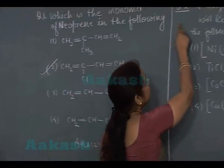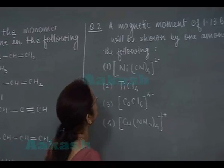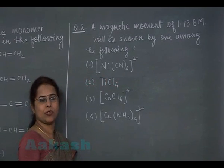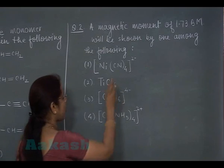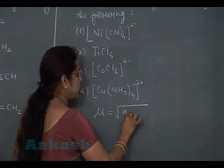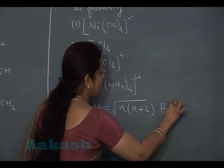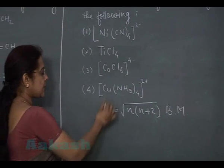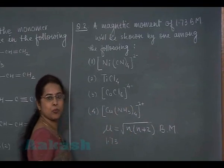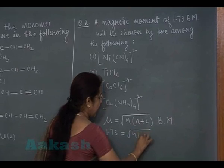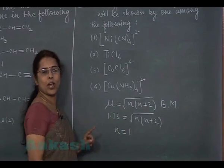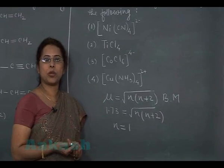Question number 2: a magnetic moment of 1.73 Bohr magneton will be shown by one among the following. The magnetic moment formula is: μ = √(n(n+2)) Bohr magneton, where n is the number of unpaired electrons. With μ = 1.73, solving the equation gives n = 1. So the complex must have 1 unpaired electron.